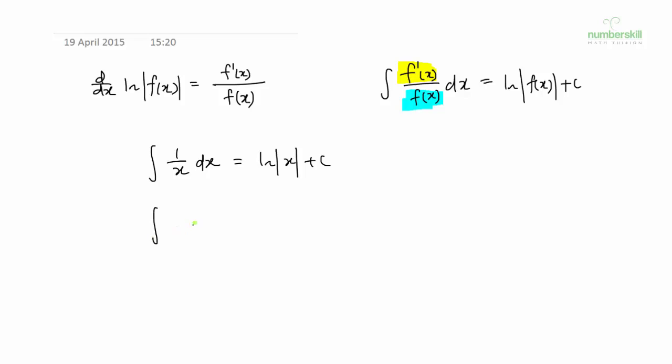Now one more. How about 2x plus 1 over x squared plus x plus 1? So this is the fraction. The answer is ln of x squared plus x plus 1. Ah, ln the denominator. The idea is that as long as the top is the derivative of the bottom, we can integrate it.